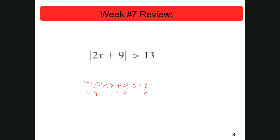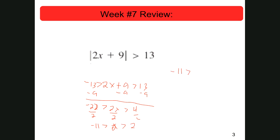So this gives me negative 21, which is greater than 2x, which is greater than 4. Then I'm going to divide through by 2 — everything. This was 22, so this would be negative 11, this would be x greater than 2. So my answer would be x is less than negative 11 and greater than 2.